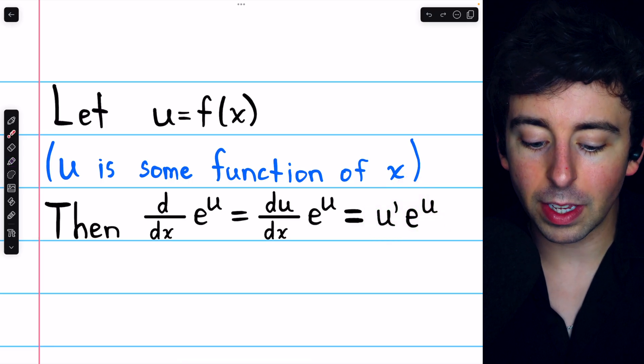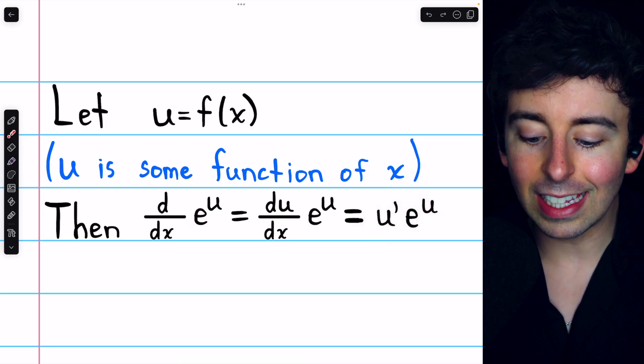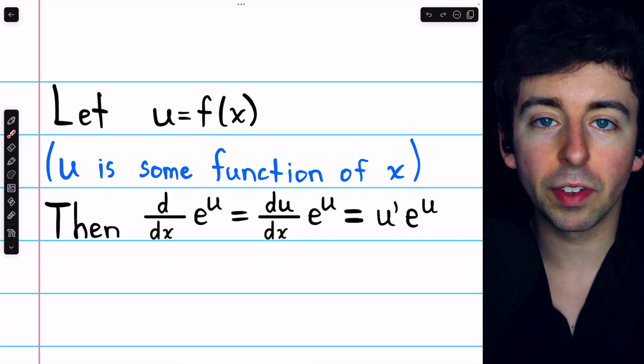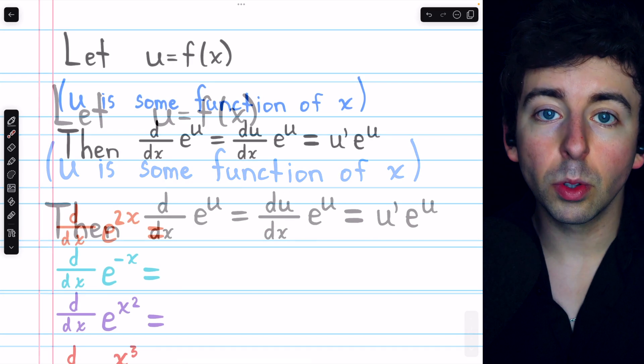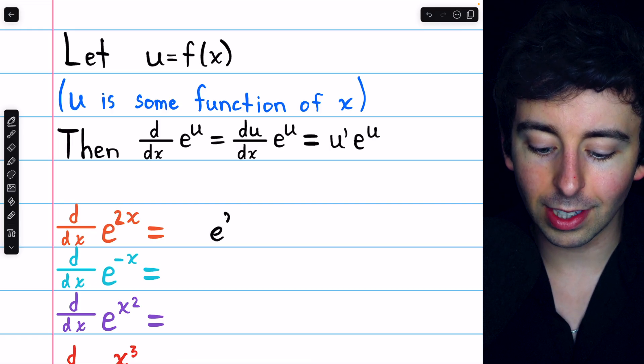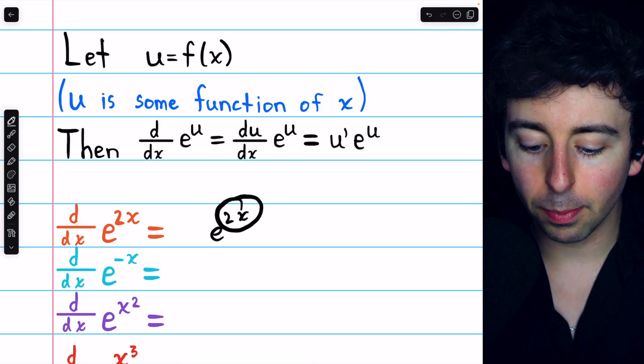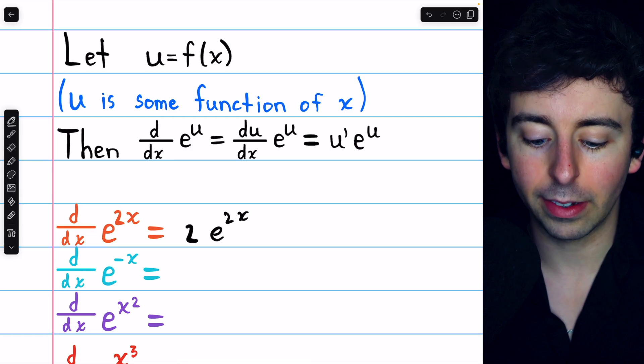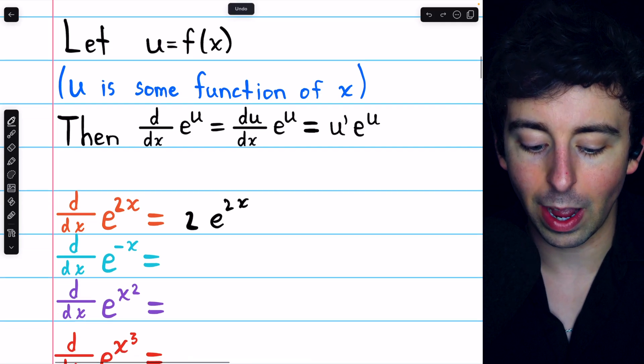So to take the derivative of e to the power of a function, leave the e alone, but multiply by the derivative of that function. So let's try a couple of these. The derivative of e to the 2x, we just leave the e alone and multiply by the derivative of that function. The derivative of 2x is 2, so it's 2e to the 2x.